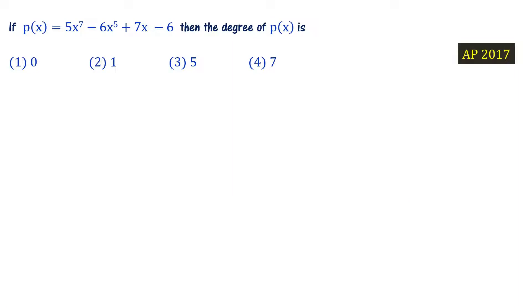Next problem: If p(x) = 5x⁷ minus 6x⁵ plus 7x minus 6, then what is the degree of polynomial p(x)? This is an AP Polytechnic Entrance 2017 question.